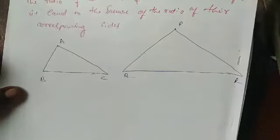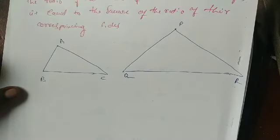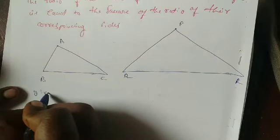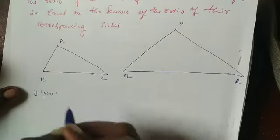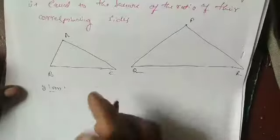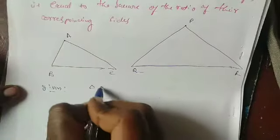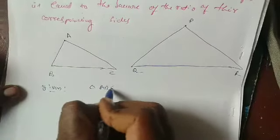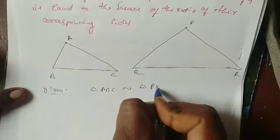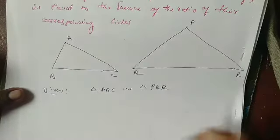The first step is: Given. What is given here? Given that these two are similar triangles — triangle ABC is similar to triangle PQR.